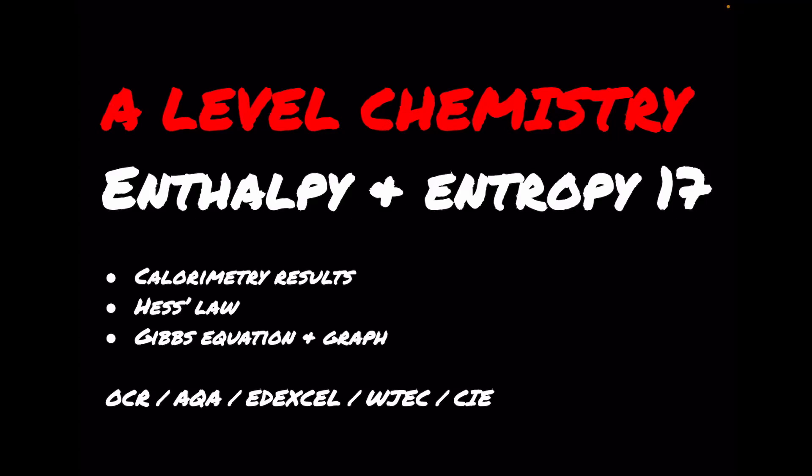I've got another A-level chemistry walkthrough for you. So this is number 17 in the enthalpy and entropy playlist. The question deals with calorimetry results, Hess's law, and Gibbs equation associated to a graph. The question is suitable for all of the major exam boards and I really hope you like the question. If you haven't already subscribed to the channel please think about doing that because it really helps me out. As always the link to the question is in the description of the video if you want to try it first.